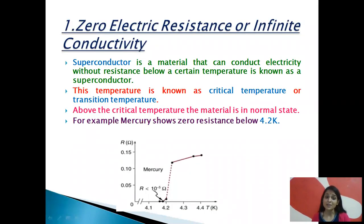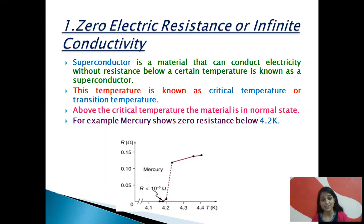The first and the most important property of a superconductor is zero electric resistance or infinite conductivity. A superconductor is a material that can conduct electricity with zero resistance below a certain temperature, known as the critical temperature. Critical temperature or transition temperature is that temperature at which the resistivity of the material suddenly drops to zero, below which the material behaves like a superconductor, and above the critical temperature, the material comes to its normal state.